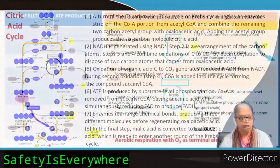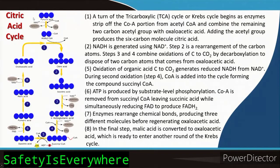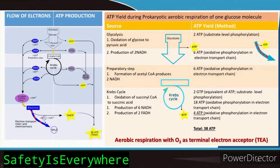Here is the full ATP accounting. From glycolysis we have already accounted for eight ATP. In the preparatory step where pyruvic acid is converted to acetyl-CoA, we get one NADH per pyruvic acid. Every NADH is equivalent to three ATPs, so for glucose we multiply: three for one pyruvic acid, giving six for two pyruvic acids — that's six ATP.